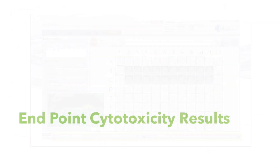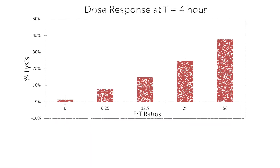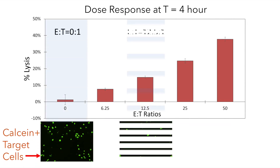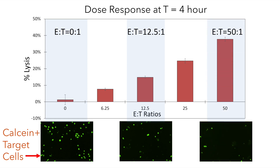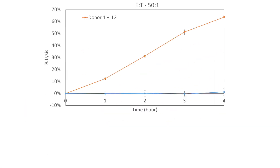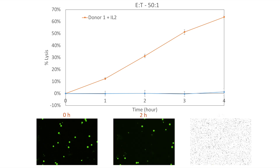The reduction in cell counts are used to calculate percent lysis, which showed increase in cell-mediated cytotoxicity as E to T ratio increased. The fluorescent images show the number of calcein-positive target cells decreased as E to T ratio increased with PBMCs. The time course results show an increase in cell-mediated cytotoxicity over the 4-hour period, which is confirmed in the corresponding fluorescent images.